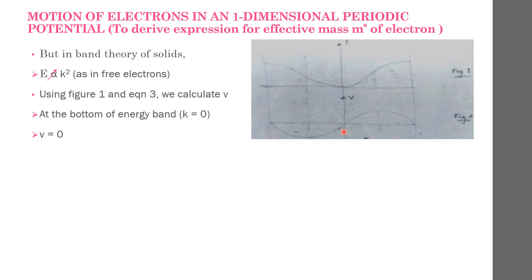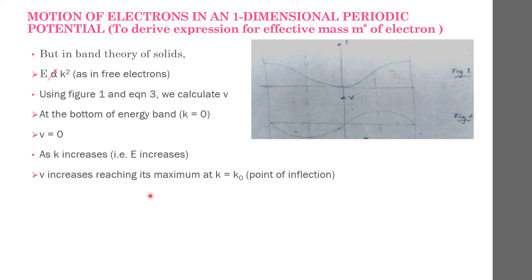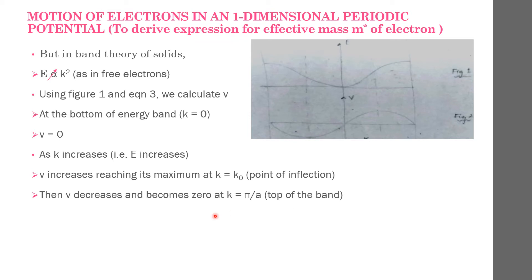As k increases — that is, as E increases going towards the top of the band — the velocity v also increases and reaches its maximum at the point of inflection. After that, v decreases and becomes 0 at k = π/a, which is the top of the band. Such a type of variation of velocity is not seen in free electrons.